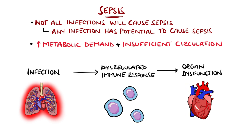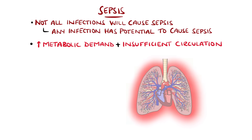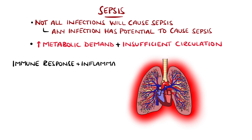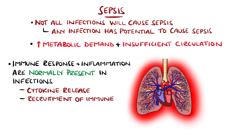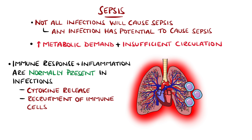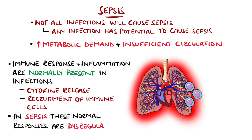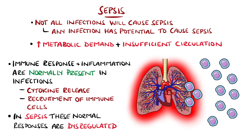It's normal for an inflammatory response to be generated towards an infection, but this tends to be localised. It includes the innate response, release of cytokines, and recruitment of inflammatory cells like neutrophils and macrophages. In sepsis, however, this response is dysregulated, which doesn't necessarily mean excessive, but it is enough to impair normal functioning of the body.